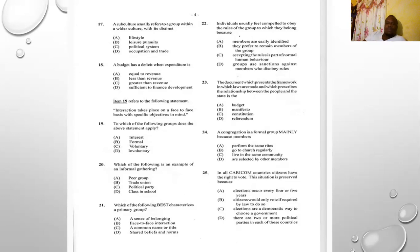Number twenty-three: the document which presents the framework in which laws are made and prescribes the relationship between the people and the state is the A) budget, B) manifesto, C) constitution, D) referendum. The answer is C) constitution.